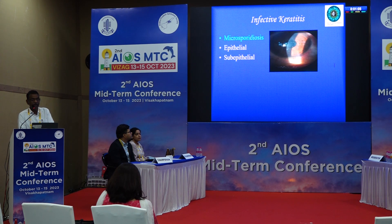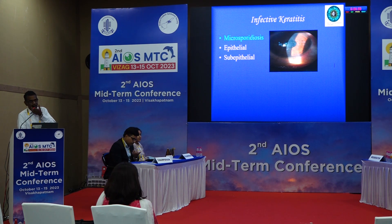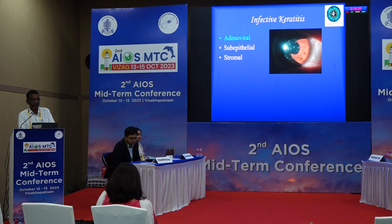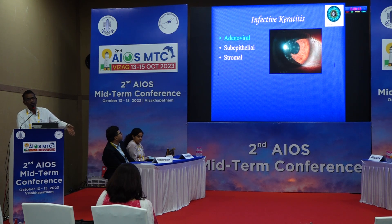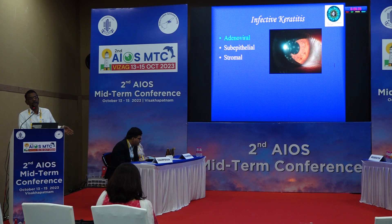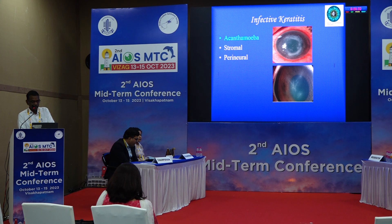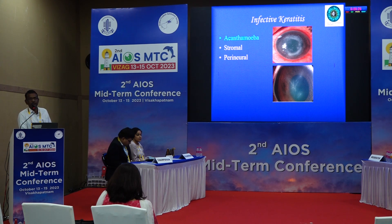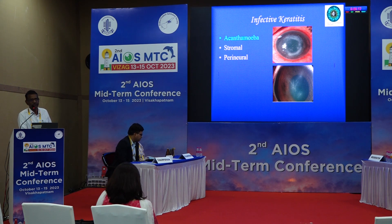We are also seeing different types of keratitis including microsporidial keratitis — for which systemic treatment like deworming should be considered. Adenoviral keratitis has become quite common — especially after conjunctivitis — and the question of when to start steroids, how long to use them, is important, as recurrent adenoviral infiltrates are increasingly seen. Acanthamoeba keratitis is quite rare and diagnostically challenging; PHMB and chlorhexidine are required — if unavailable at your drug store, refer to a higher institute.